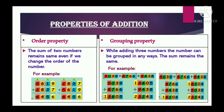Now let us talk about the first property which is order property. The sum of two numbers remains the same even if we change the order of the numbers. For example, here you can see we have added two numbers by changing their order and the answer is still the same. So it does not change the sum if we change the order of the numbers.